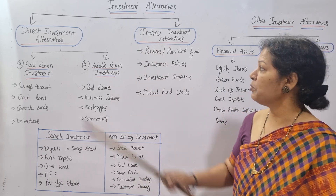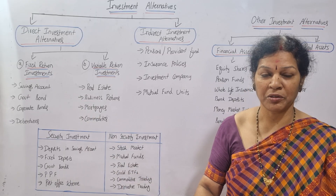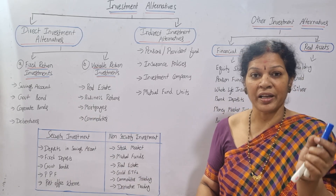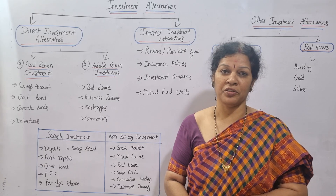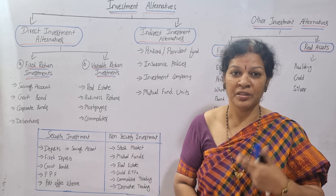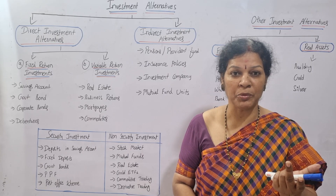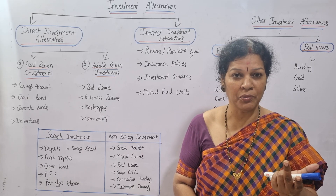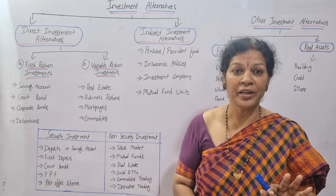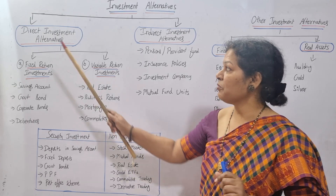Investment alternatives are mainly divided into two parts. The first is direct investment alternatives. Direct investment means the investor is directly investing in those organizations — no mediators. You know where you're investing, you know how much return you're going to get, you know what kind of business they are doing. Everything is known directly by the investor.